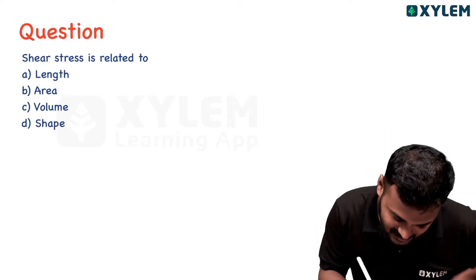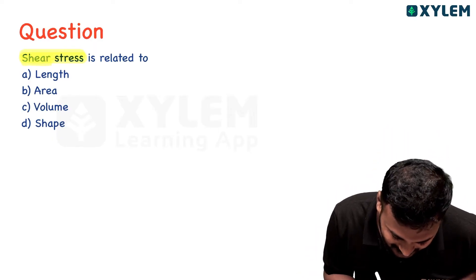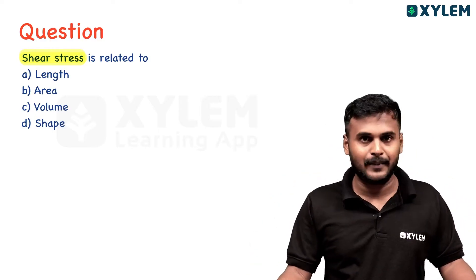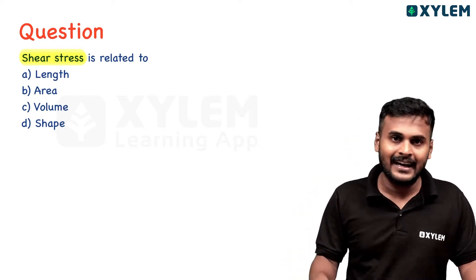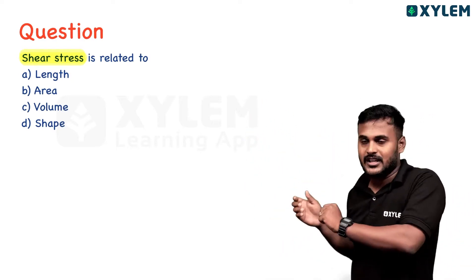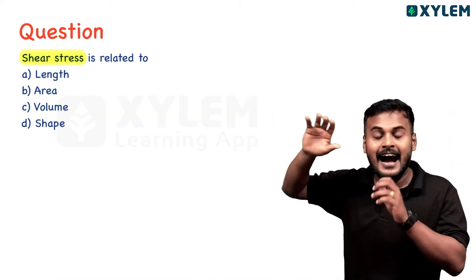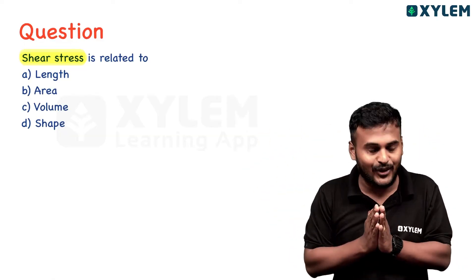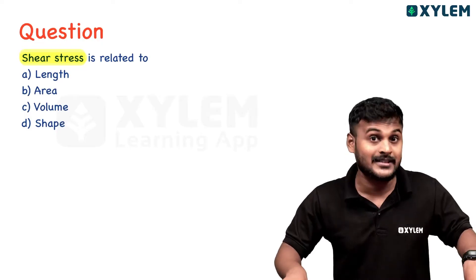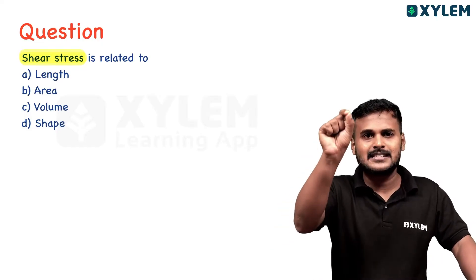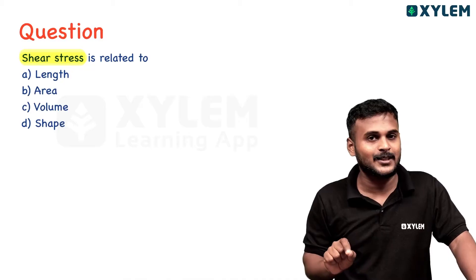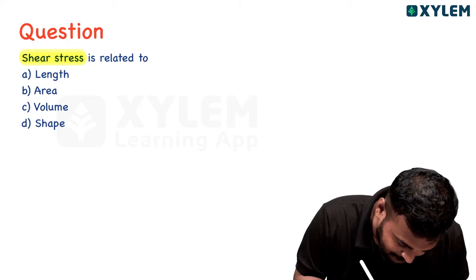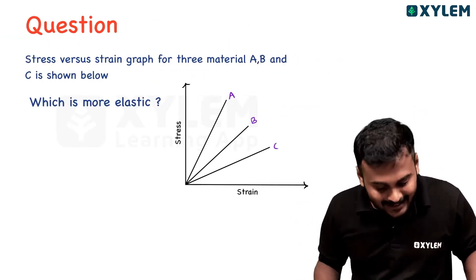Shear stress is related to shape. When we study shear stress — what is shearing modulus, what is shearing strain — we learn about the tangential force applied to the top face. If I apply a tangential force, the body changes shape and size. A restoring force is created, and that restoring force per unit area is called shearing stress, which is related to shape change.